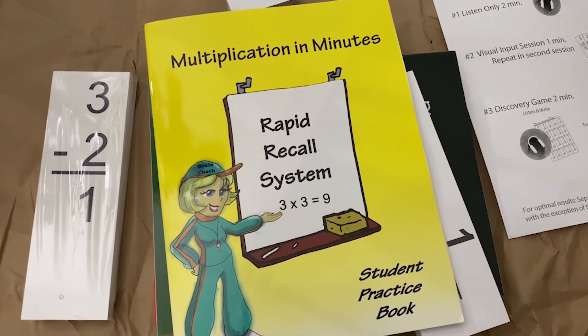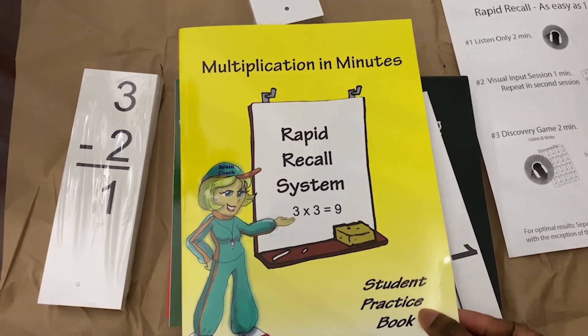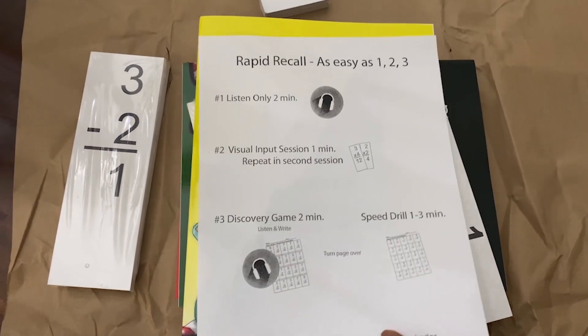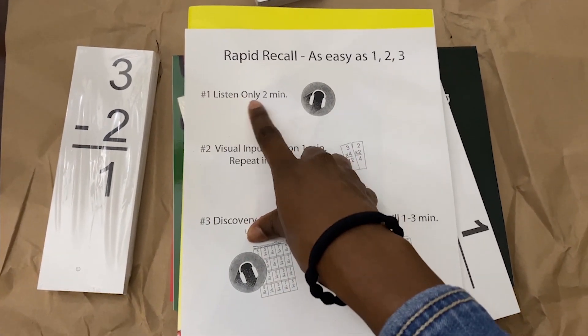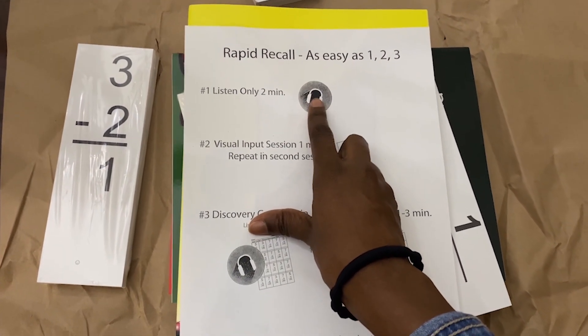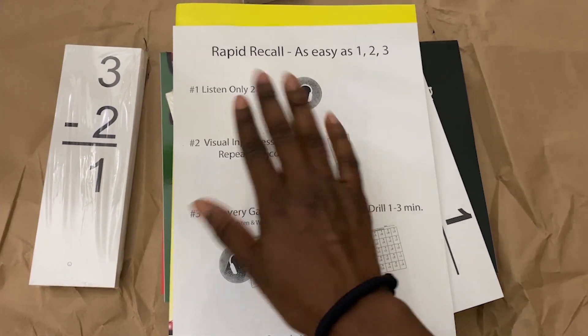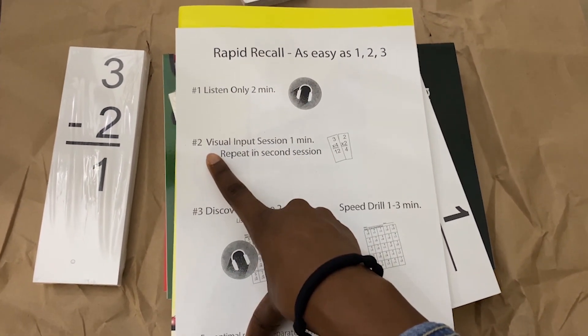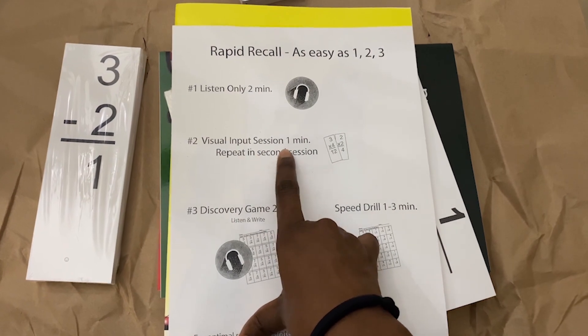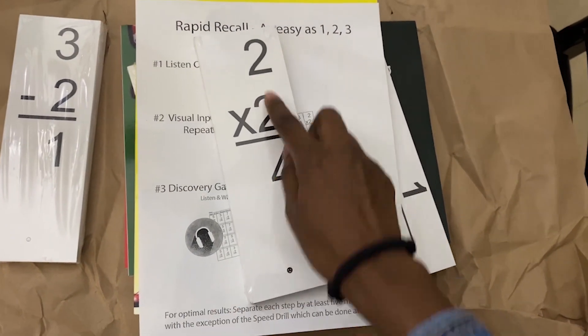Okay, so here's a closer look at how it works. You have the child listen to the downloadable audio track that will be sent to you when you order it. They'll listen to that for two minutes and that's it. At another point throughout the day they'll have a visual input session for one minute, and that's when you're just flashing them the cards: